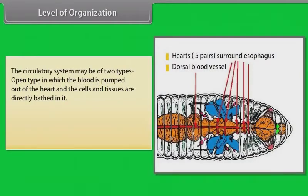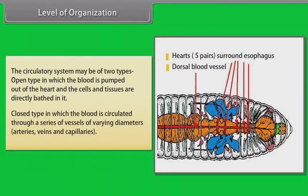The circulatory system may be of two types. Open type, in which the blood is pumped out of the heart and the cells and tissues are directly bathed in it. Closed type, in which the blood is circulated through a series of vessels of varying diameters — that is, arteries, veins and capillaries.